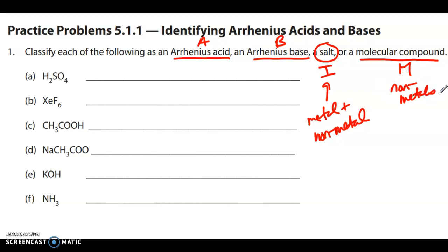Whereas a molecular compound, I'm going to use an M. This is essentially non-metals only. Okay. So right away, just identifying this here. So we have hydrogen with sulfate, right? So we have hydrogen ions. We know this is going to be an acid.